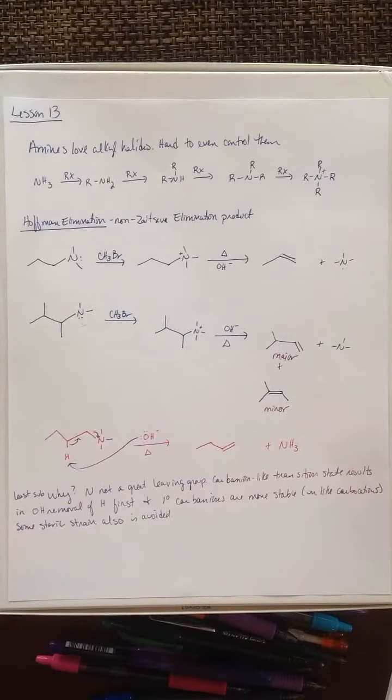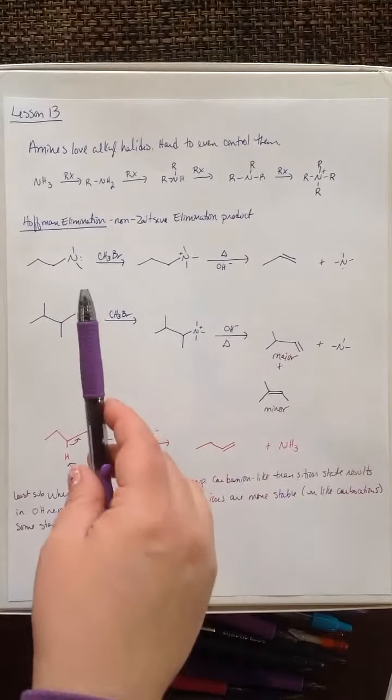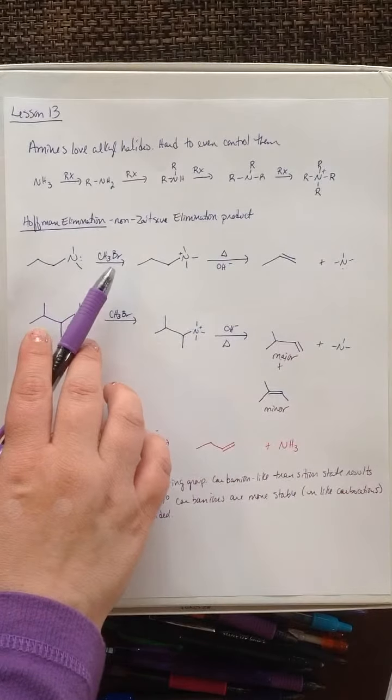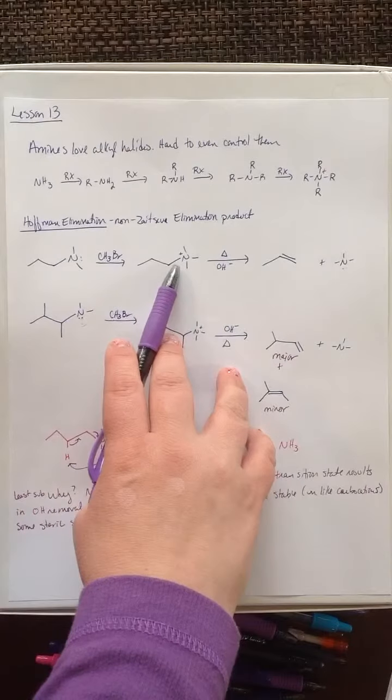Well, we can actually use that to our advantage when it comes to making the Hoffman elimination happen, which is a non-Zaitsev elimination product. Here, we can take an amine and add an alkyl halide, giving you a quaternary ammonium salt.